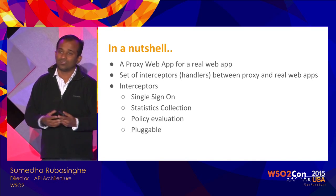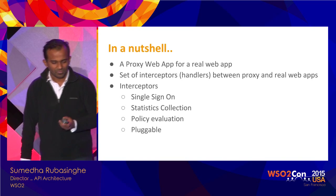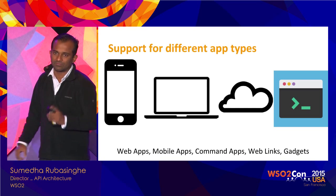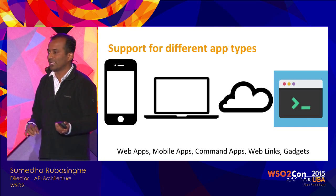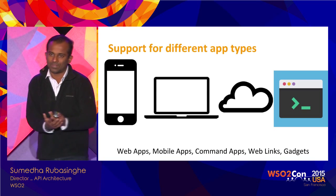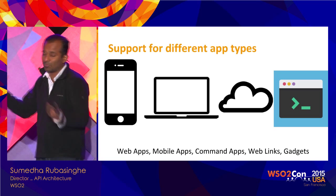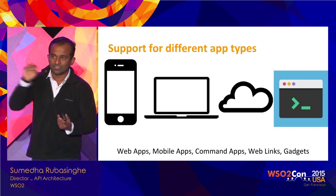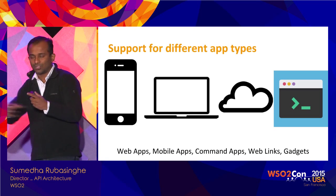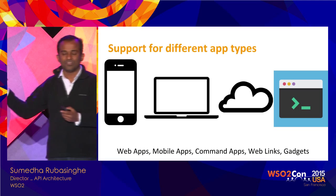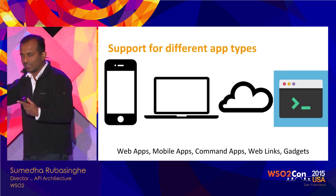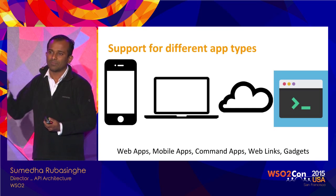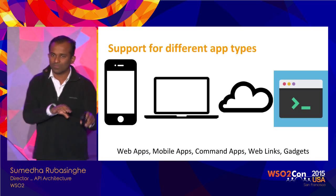We have interceptors for single sign-on, statistics collection, and policy evaluation, and these handlers can be plugged in based on requirements. We support multiple application types — web applications and mobile applications. For mobile applications, they don't go through the gateway because mobile apps make direct API calls; mobile support is mainly for delivery and integrates with WSO2 Mobile Device Management so clicking an app in the store installs it on your device. We also support sharing web links and are adding command-line application support.